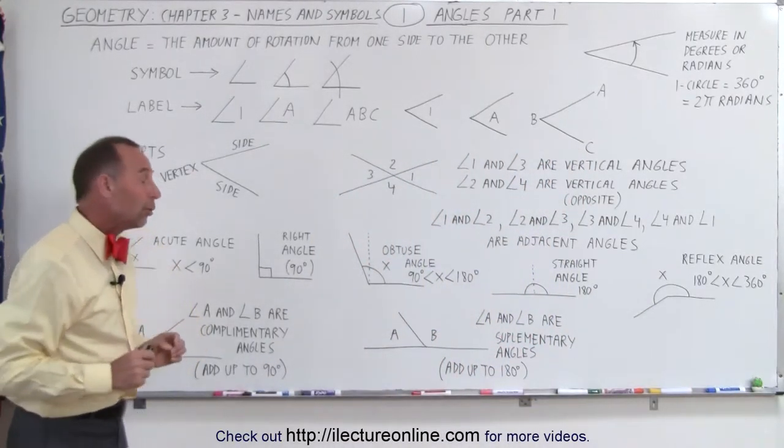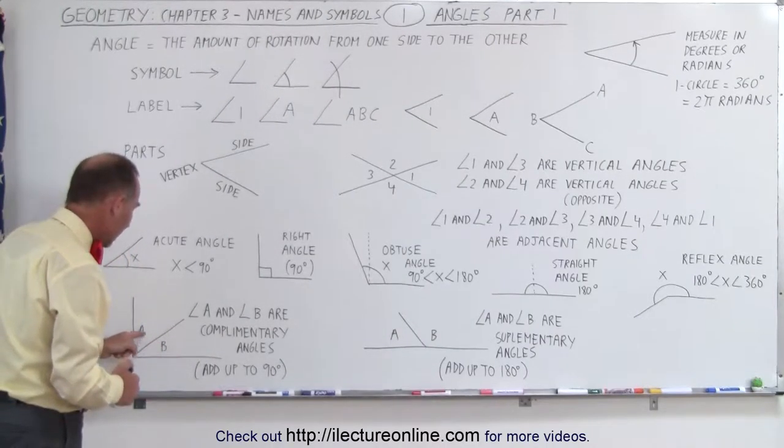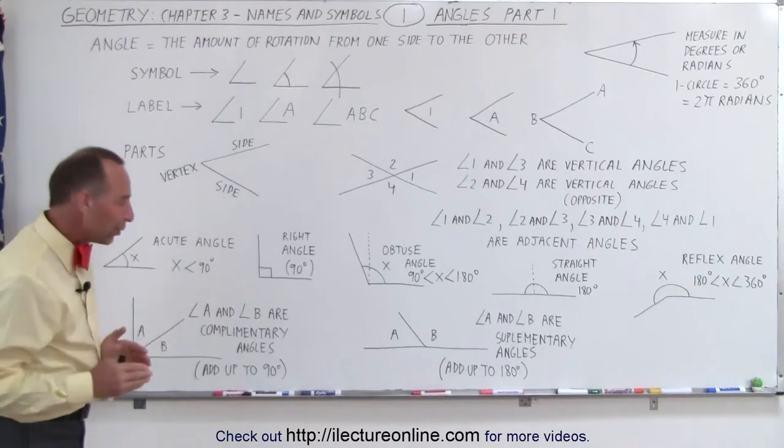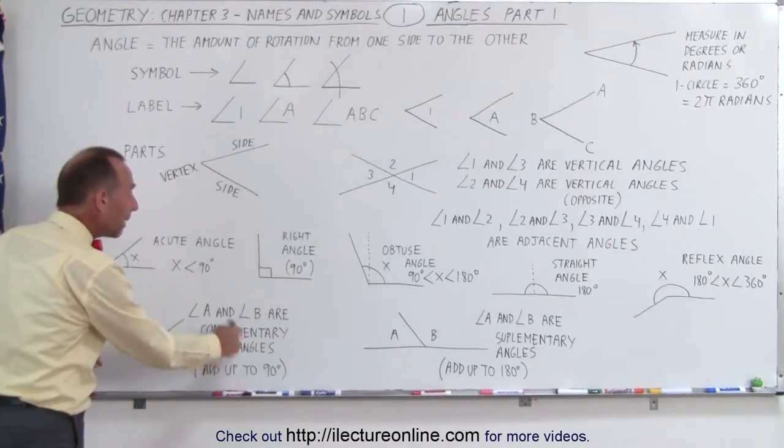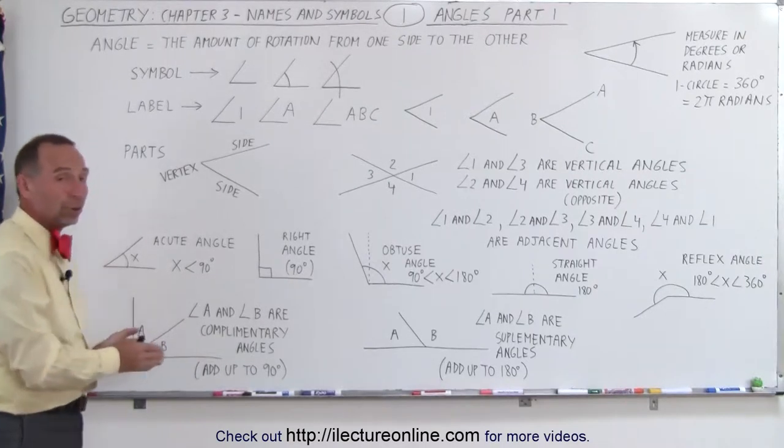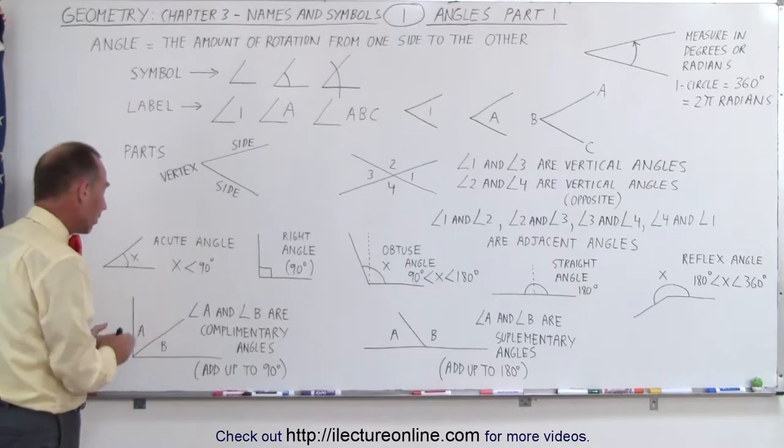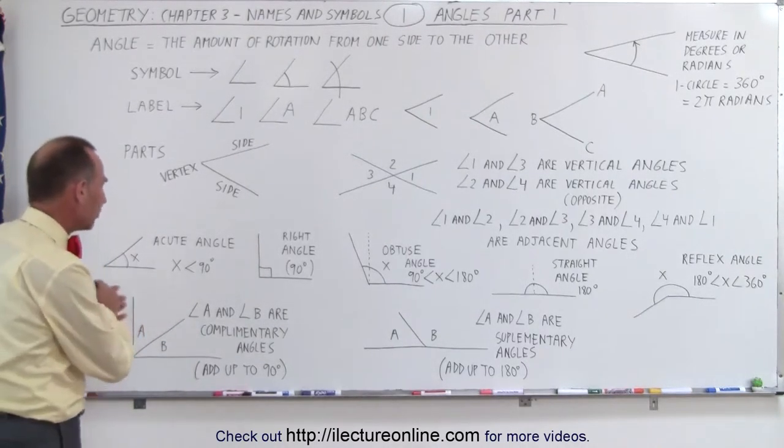Some other things that we need to know about angles is that when we have two angles side by side, like angle A and angle B, so they share a common side. If the two angles together add up to 90 degrees, we call them complementary angles. So they both add up to 90 degrees. Let's say angle A is 60 degrees, angle B is 30 degrees, 60 plus 30 is 90, therefore they're called complementary angles.